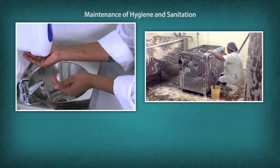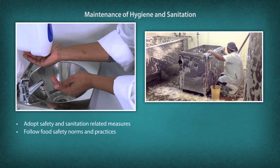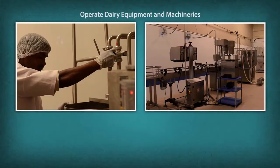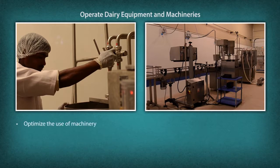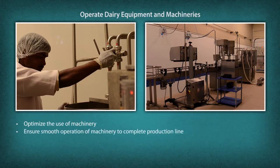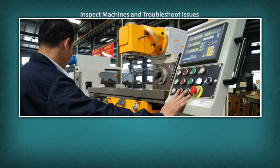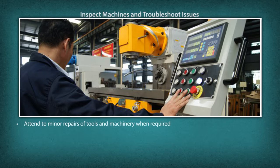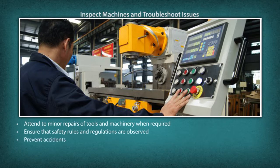Maintenance of hygiene and sanitation: adopt safety and sanitation related measures and follow food safety norms and practices. Operate dairy equipment and machineries: optimize the use of machinery, ensure smooth operation of machinery to complete the production line, inspect machines and troubleshoot issues, attend to minor repairs of tools and machinery when required, ensure that safety rules and regulations are observed, and prevent accidents.